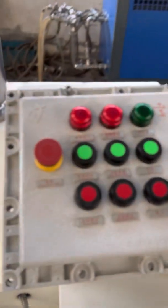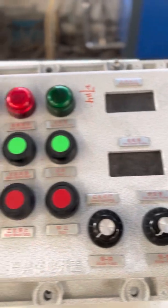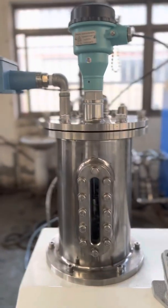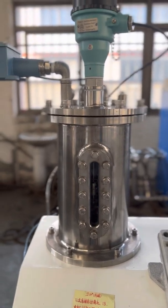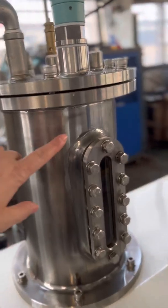Here is the electrical control panel. You can see it is explosion-proof. And this one is the cooling tank for the mechanical seal. Inside is the cooling water.